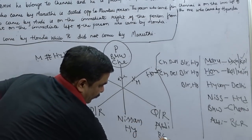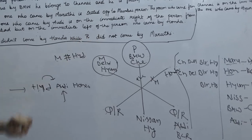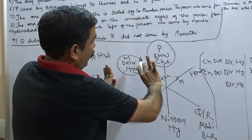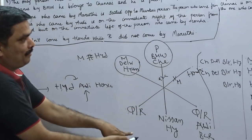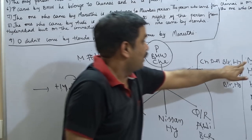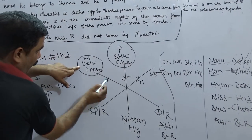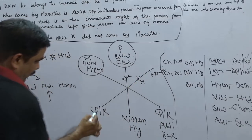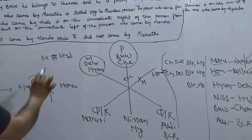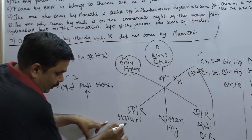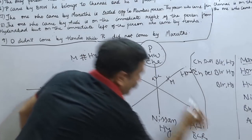Now the last clue: O did not come by Honda, while R did not come by Maruti. R did not come by Maruti means Q must be the Maruti person. So Q is assigned Maruti. Then, since Hyundai, BMW, Honda, Audi and Nissan are taken, Maruti goes to Q and R takes the remaining car.